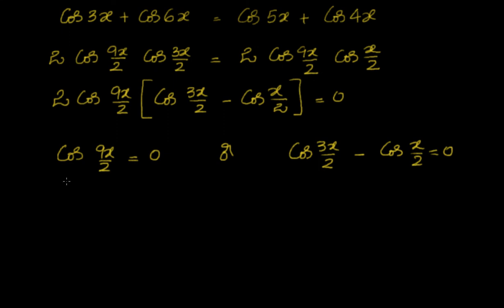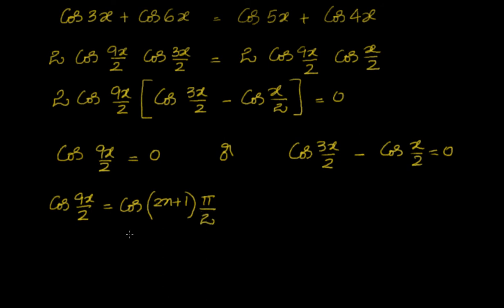This is of the form cos θ equal to 0. We know that the general equation for this is cos(9x/2) equal to cos((2n+1)·π/2). So the general solution x will be equal to (2/9)·(π/2)·(2n+1), which simplifies to (2n+1)π/9.